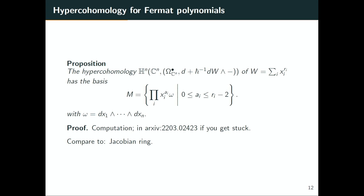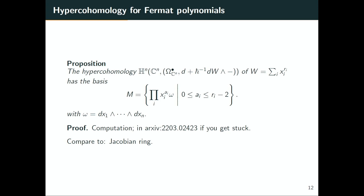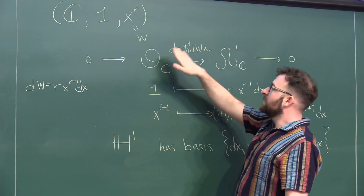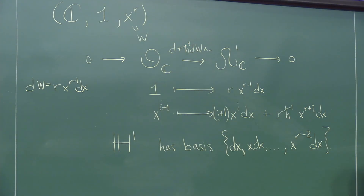You can actually generalize this for any Fermat polynomial — it works the same way, you just do the straightforward computation. It's a good exercise; if you get stuck you can check the preprint. You can compare it to the Jacobian ring. I've twisted it, and there's a reason — you'll see it in just a second.